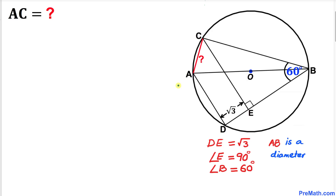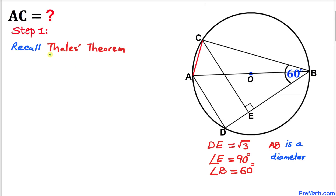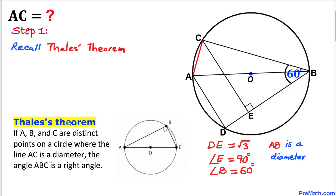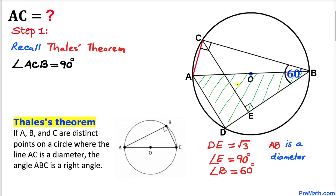Let's get started with the solution. Note that this figure may not be 100% true to scale. Let's recall Thales theorem: if A, B and C are distinct points on a circle where the line AC is a diameter, then the angle ABC is going to be 90 degrees. Focusing on triangle ACB, angle ACB is 90 degrees. And focusing on triangle ABD, angle ADB is also 90 degrees.